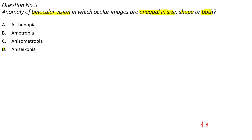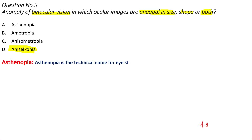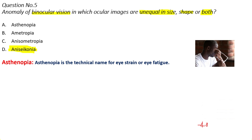As we know, the answer is Option D — Anisoconia. So why is Option D correct? Let's quickly revise the other options. Option A is Asthenopia. Asthenopia is a technical name in ophthalmology that denotes eye strain or eye fatigue — that is, if a patient has symptoms like headache, itching, watering, irritation, or tiredness, these are called asthenopic symptoms. So Option A is not the correct answer.